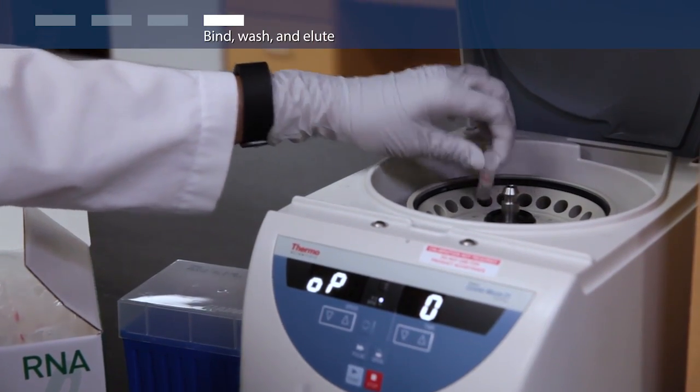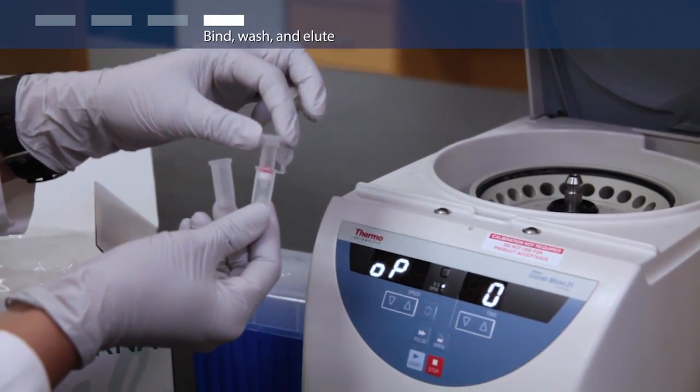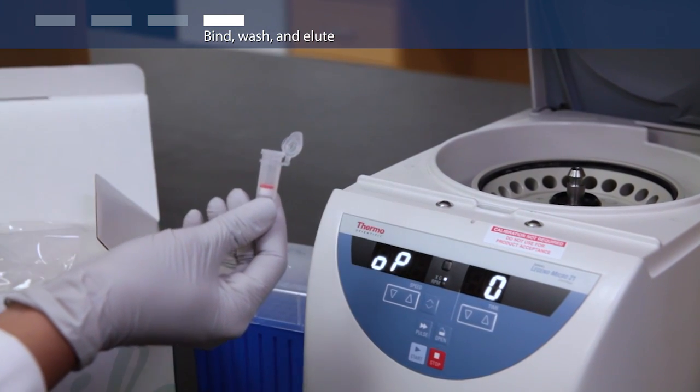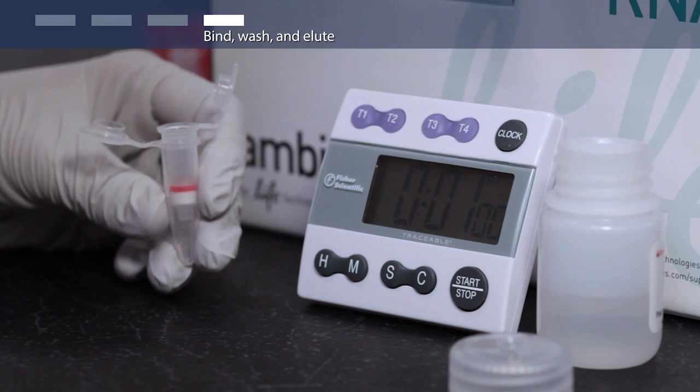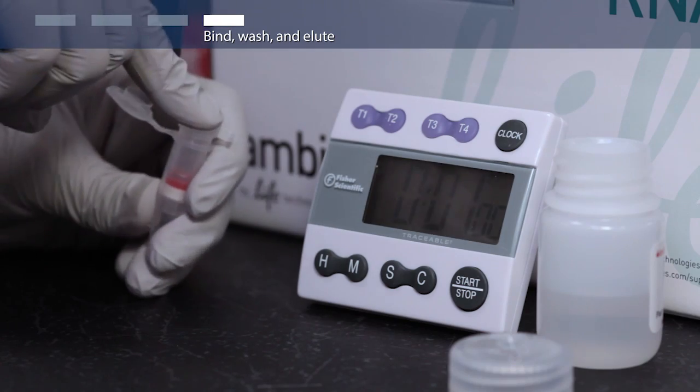Dry the silica membrane by centrifuging the column at 12,000 g for 1 minute. Discard the collection tube. To elute your RNA from the silica membrane, insert the column into the recovery tube.